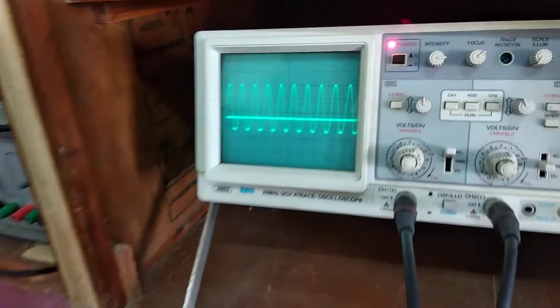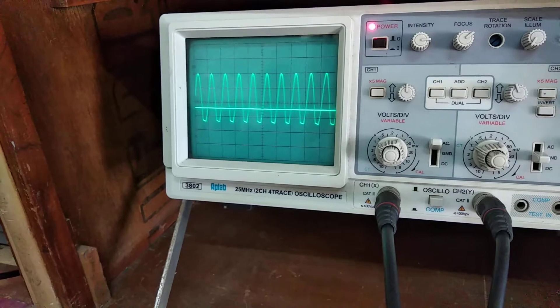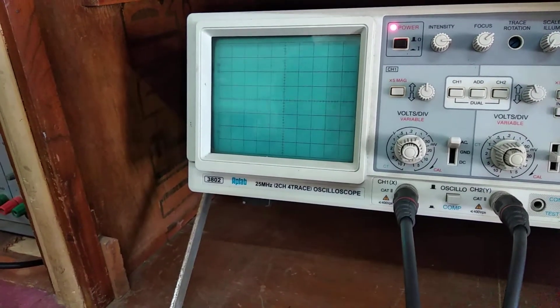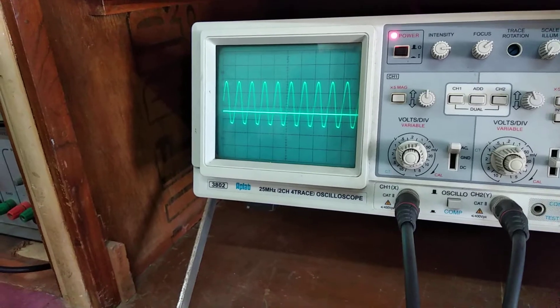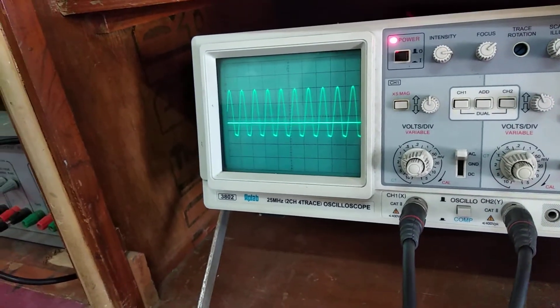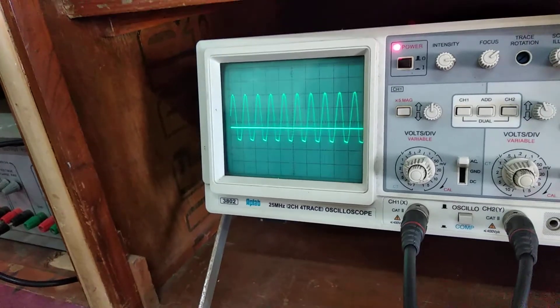Now as we adjust the potentiometer, look at the signal. It slightly changes, after a point of time it vanishes. So you need to adjust it properly so that the signal stays without clipping much. And now the signal is there.